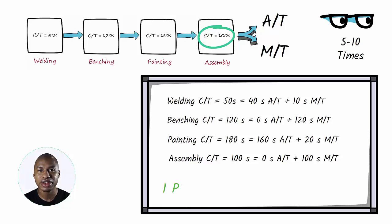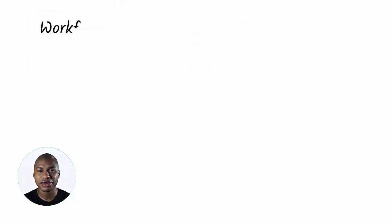Looking at the table, it is simply calculated that for the production of one piece, there is a need for 250 seconds of human work. Once this information has been calculated, it is possible to proceed with the calculation of the workforce required in relation to the customer demand and therefore to the takt time.